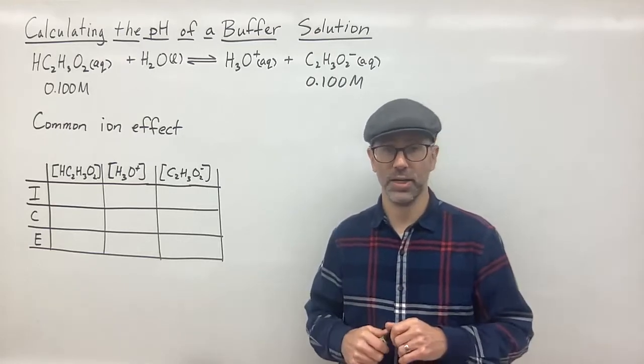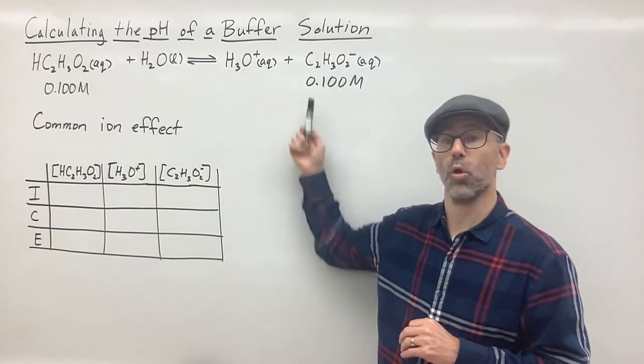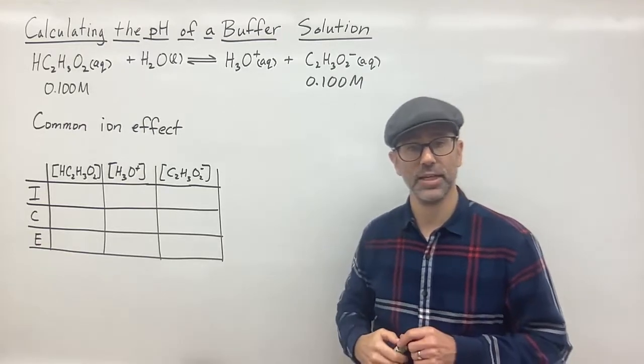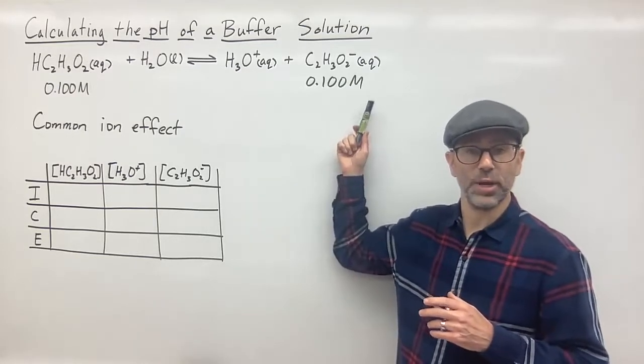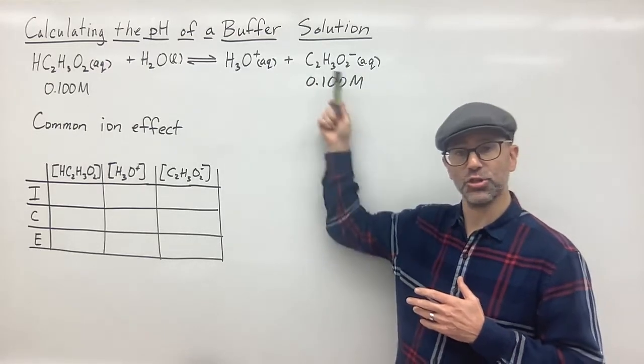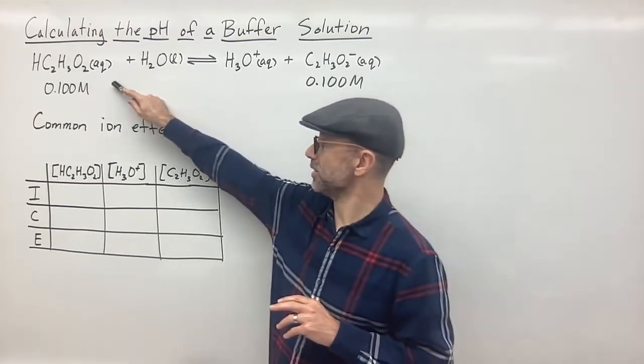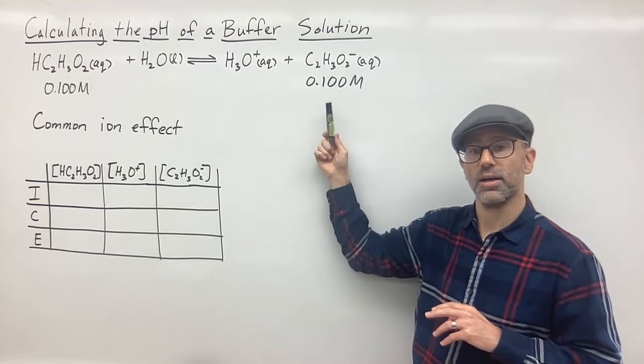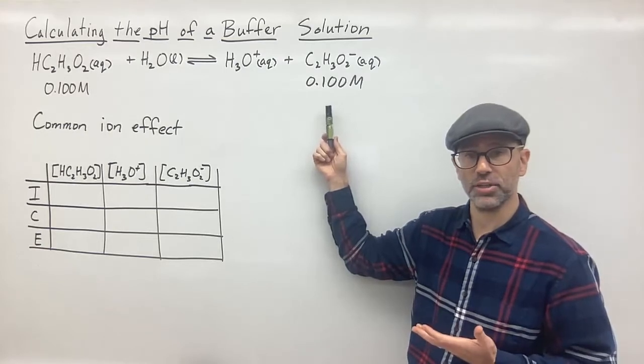One of the things we need to talk about is the effect that having the conjugate base already mixed in at the very beginning of the mixture, how that's going to affect the equilibrium. If you remember from Le Chatelier's principle that if we are to add more product here, if we add this to our equilibrium, let's assume for a moment that we just have the acid and then we've reached equilibrium and we go ahead and add some of this conjugate base.